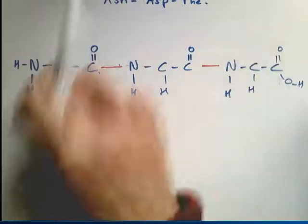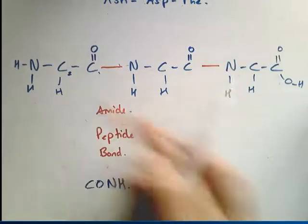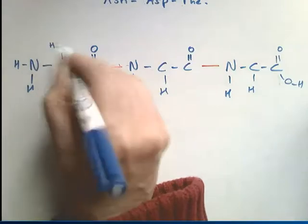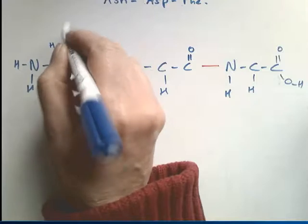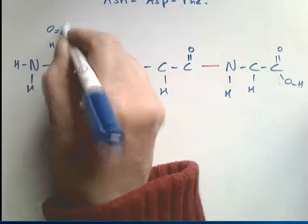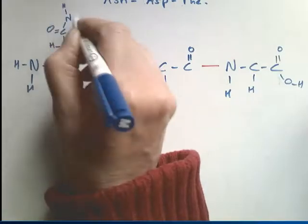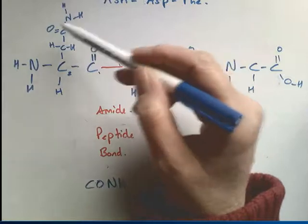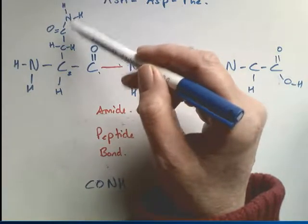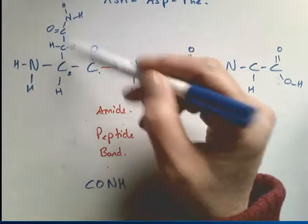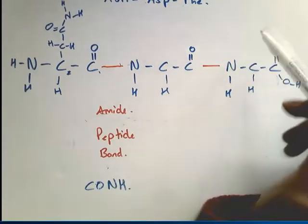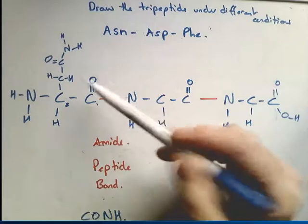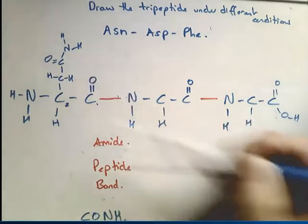Each amino acid has a side chain. For ASN, I draw the whole thing out: CH2, then another carbon and oxygen. The bonds won't be at the exact angles I'm drawing, but as long as they're connected correctly — each carbon has four bonds. This side chain ends in an amide bond C-O-NH2, which is a primary amide, but it's not a peptide because it's not between amino acids.